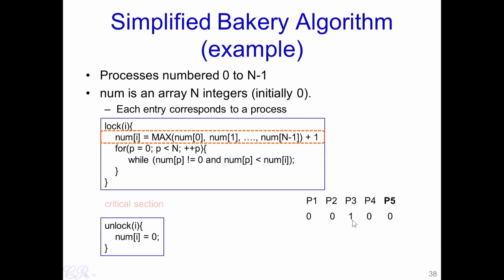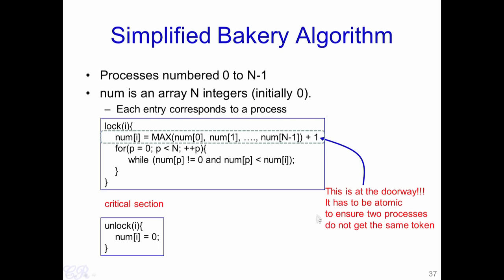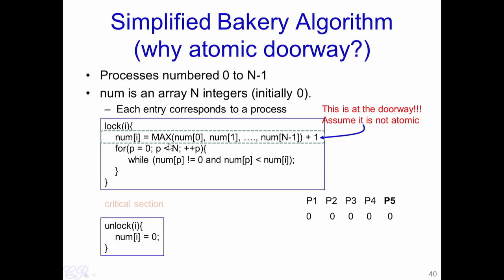One important assumption is that the assignment of max needs to be atomic. This is required to ensure that no two processes get exactly the same token. It means that when a process executes the max statement — finding the max of all numbers and adding one — no context switch can occur. This entire statement executes as a single entity, ensuring no two processes get the same value of num.